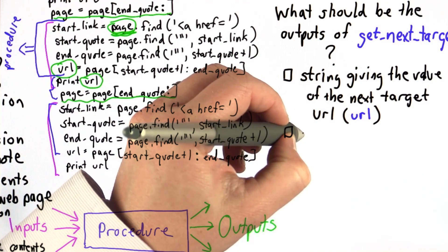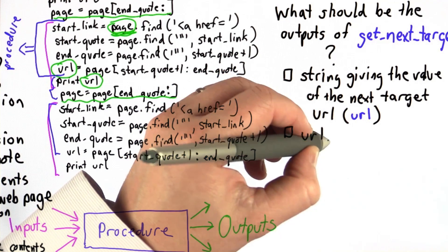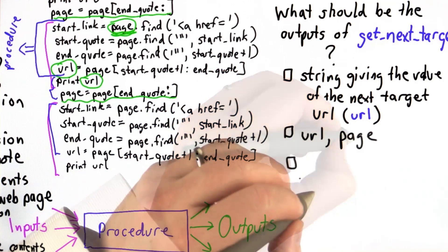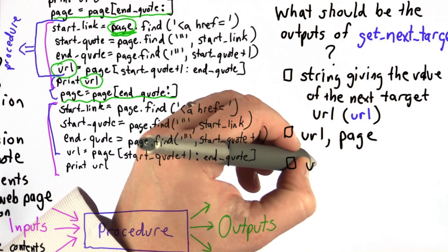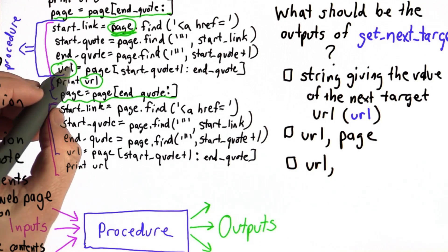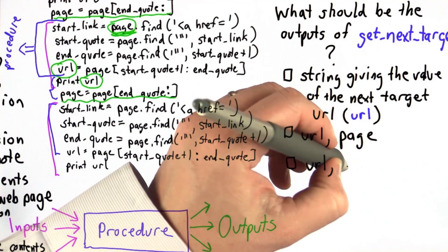The second choice is we should output both the URL and the page. The third choice is that we should output both the URL and the value of end quote, the position where the end of the quote is.